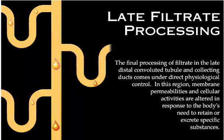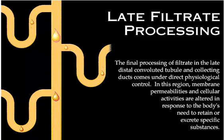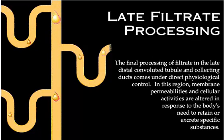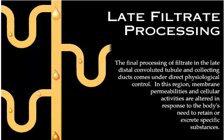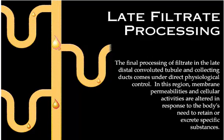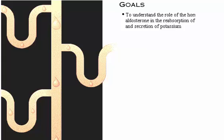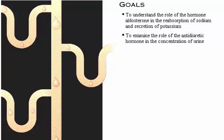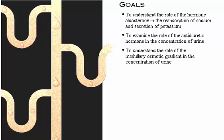The final processing of filtrate in the late distal convoluted tubule and collecting ducts comes under direct physiological control. In this region, membrane permeabilities and cellular activities are altered in response to the body's need to retain or excrete specific substances. Your goals for learning are to understand the role of aldosterone in the reabsorption of sodium and secretion of potassium, to examine the role of antidiuretic hormone in the concentration of urine, and to understand the role of the medullary osmotic gradient in the concentration of urine.